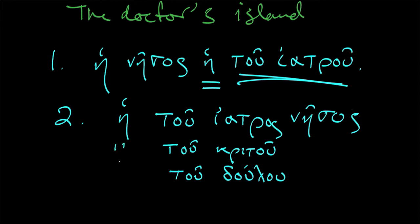And then just reduplicating here, if we were to say the island of the judge, the island of the slave. This is how we would do it. Oh, error. Sorry. Iatros was the nominative, so that would have made no sense. Iatrou is what we want. So hē tou iatrou nēsos, the island of the doctor.